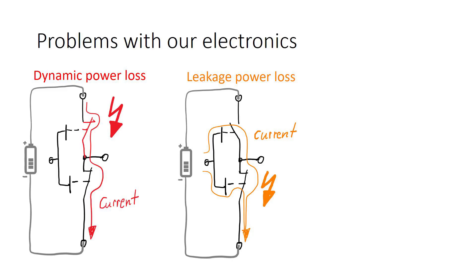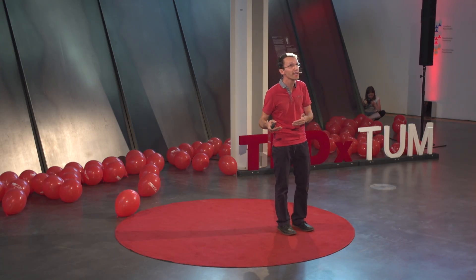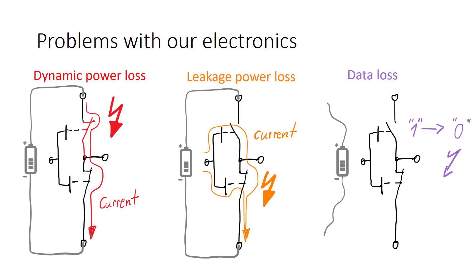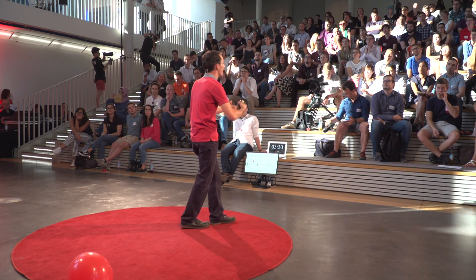Second problem: those switches became smaller and smaller and smaller. They are so small that insulators do not behave like insulators anymore. Current is flowing everywhere — we have leakage. Leakage power loss is a problem in nowadays electronics. Third problem: have you ever taken out the battery of your smartphone? All the data is lost. Taking out a battery of an electronic circuit, all the data is lost. So it is not a stable state — everything is going to ground state. We cannot use those switches to store data.